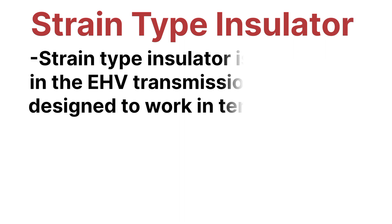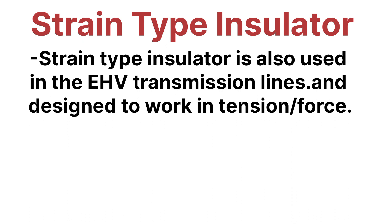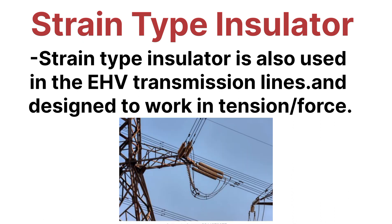The strain type insulator is an electrical insulator designed to work under mechanical tension or strain, to withstand the pull of a suspended electrical wire or cable. Here the number of discs are connected together horizontally. This type of insulator is used to turn or anchor the transmission line to the pole.